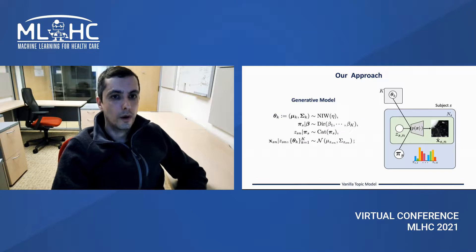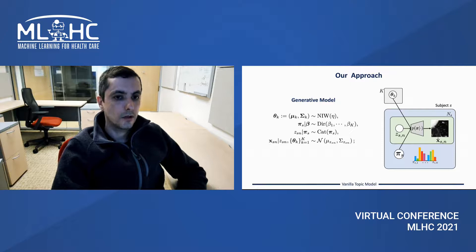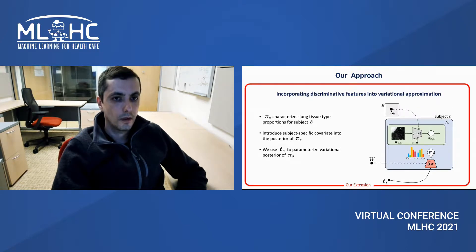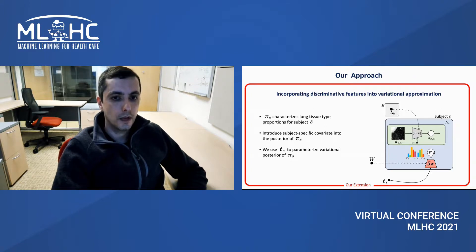We start with the well-known probabilistic topic model, where lung images are treated as collections of patches. These patches are assumed to be generated from K tissue subtypes. Each image is characterized by a distribution over tissue subtypes, and each subtype is a distribution over visual appearance of patches. The diagram shown on the right describes this generative process for how the observed lung images were constructed. We extend the topic model by introducing subject-specific covariates relative to disease, which are used to jointly learn the distribution over subtypes specific to a subject via the function shown in red.